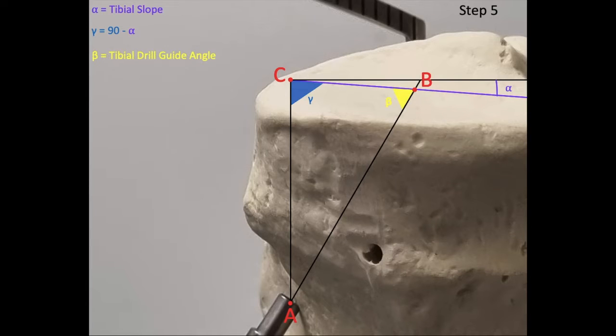The beta angle is the tibial drill guide angle. Considering that the internal angles of a triangle measure 180 degrees, we know that the delta angle is equal to 180 degrees minus gamma angle minus beta angle. Substituting the gamma angle in from above yields the delta angle equal to 90 degrees minus beta plus alpha.